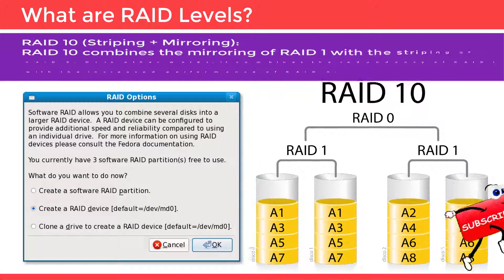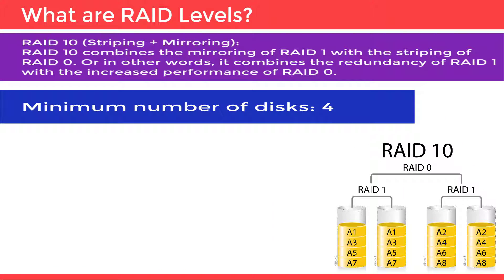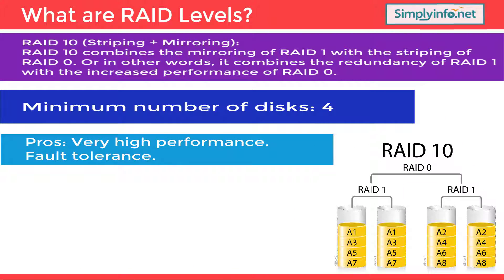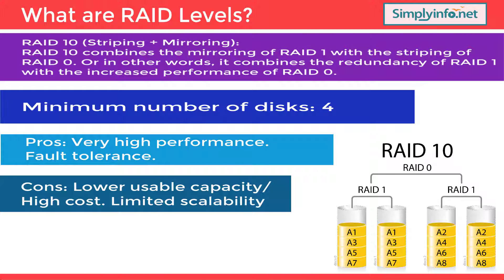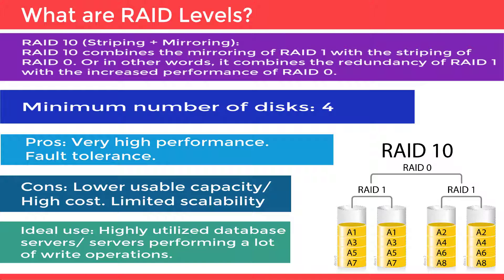RAID 10, Striping plus Mirroring: RAID 10 combines the mirroring of RAID 1 with the striping of RAID 0 — in other words, it combines the redundancy of RAID 1 with the increased performance of RAID 0. Minimum number of disks required is four. Pros: very high performance and fault tolerance. Cons: lower usable capacity with high cost and limited scalability. Ideal use: highly utilized database servers and servers performing a large number of write operations.